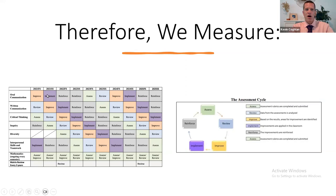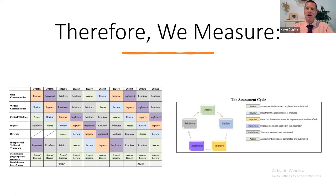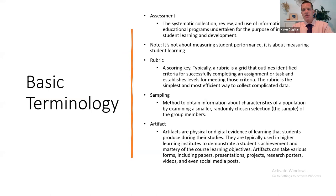How we assess each class follows a cycle. First, we assess, then we review our data, then we come up with our action plan, then we implement it, and then we go back and ask: are our outcomes effective? How can we reinforce this to get positive outcomes? Then we reassess and compare from prior years to see where we're at — are we improving, declining, or staying even? We come to these interpretations after we evaluate.